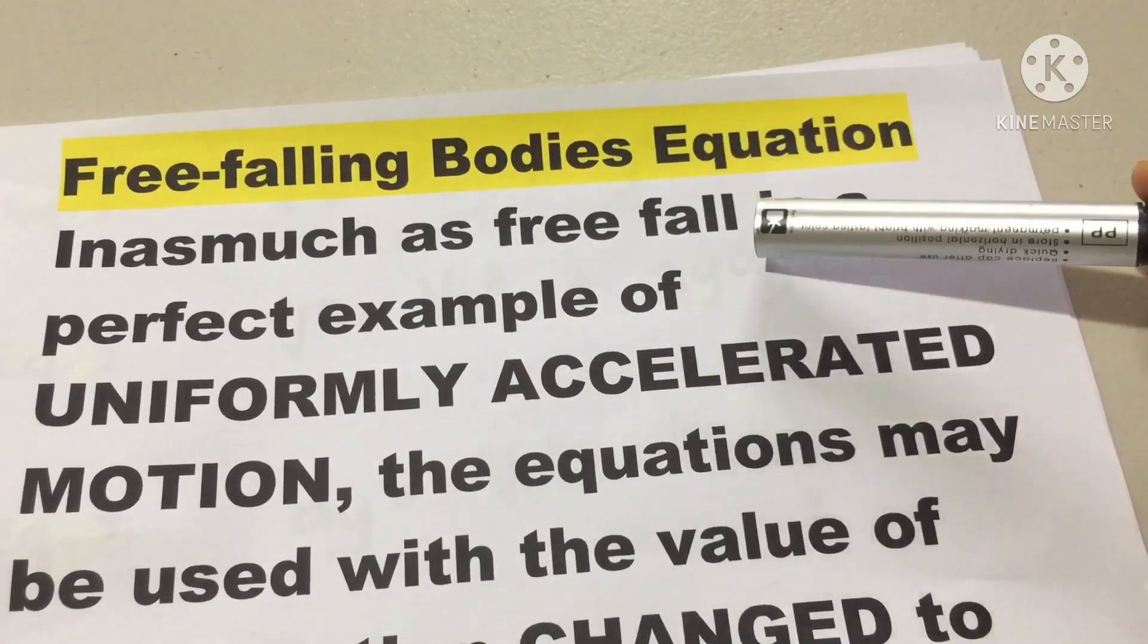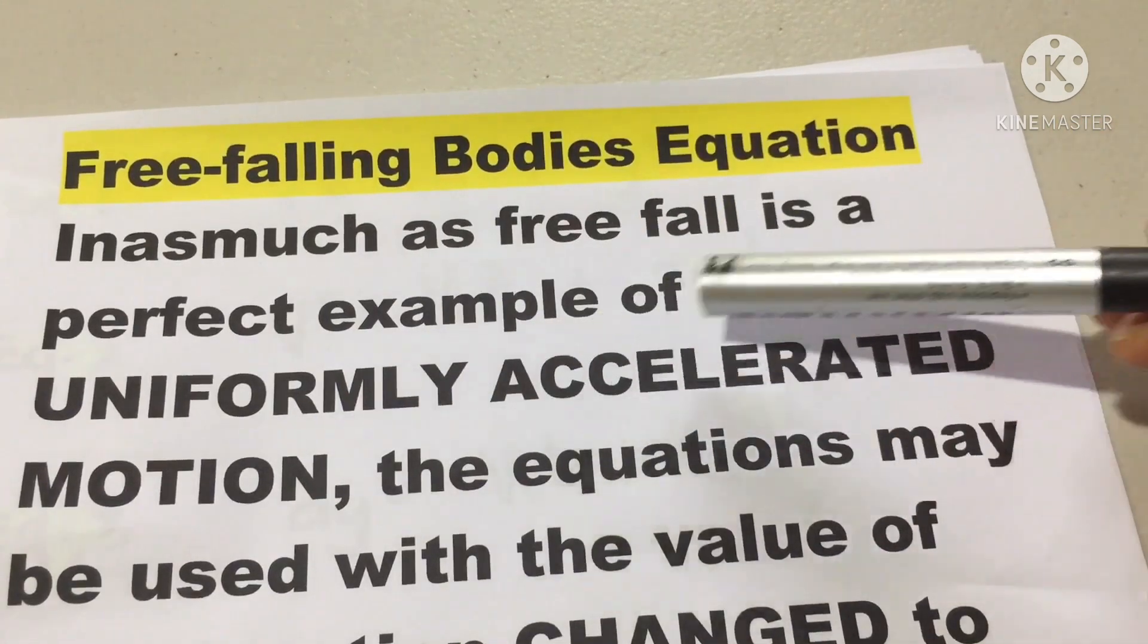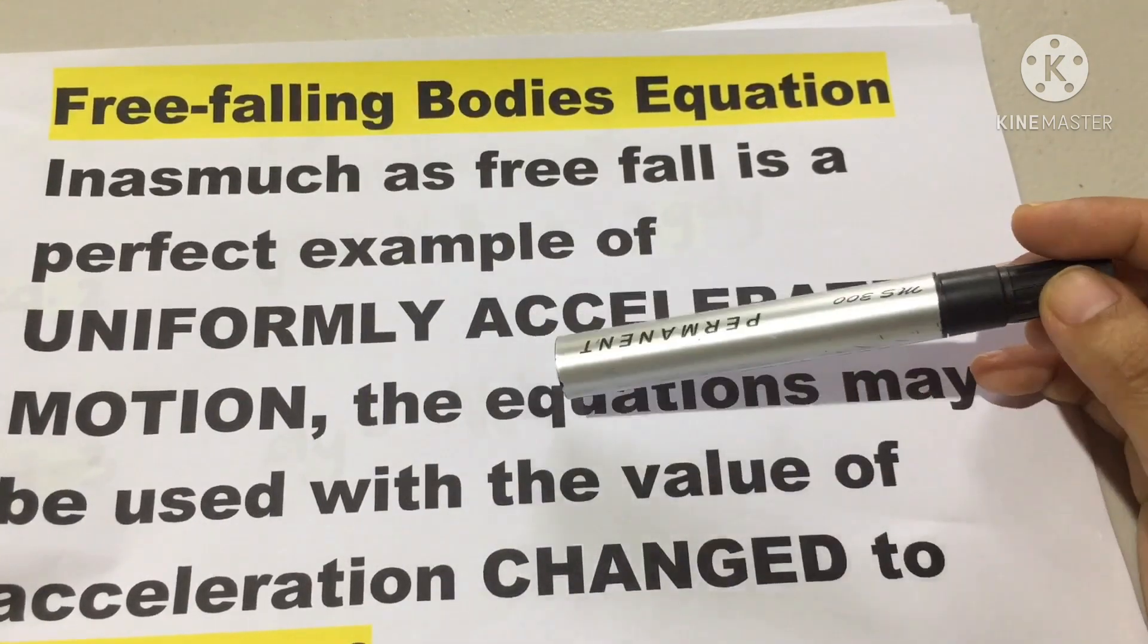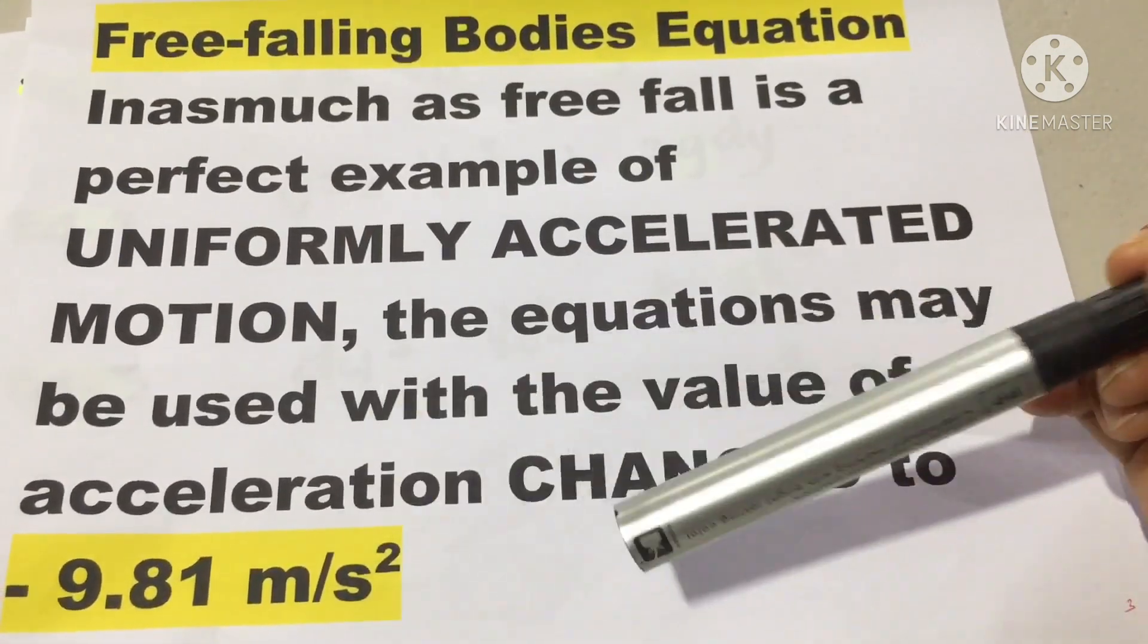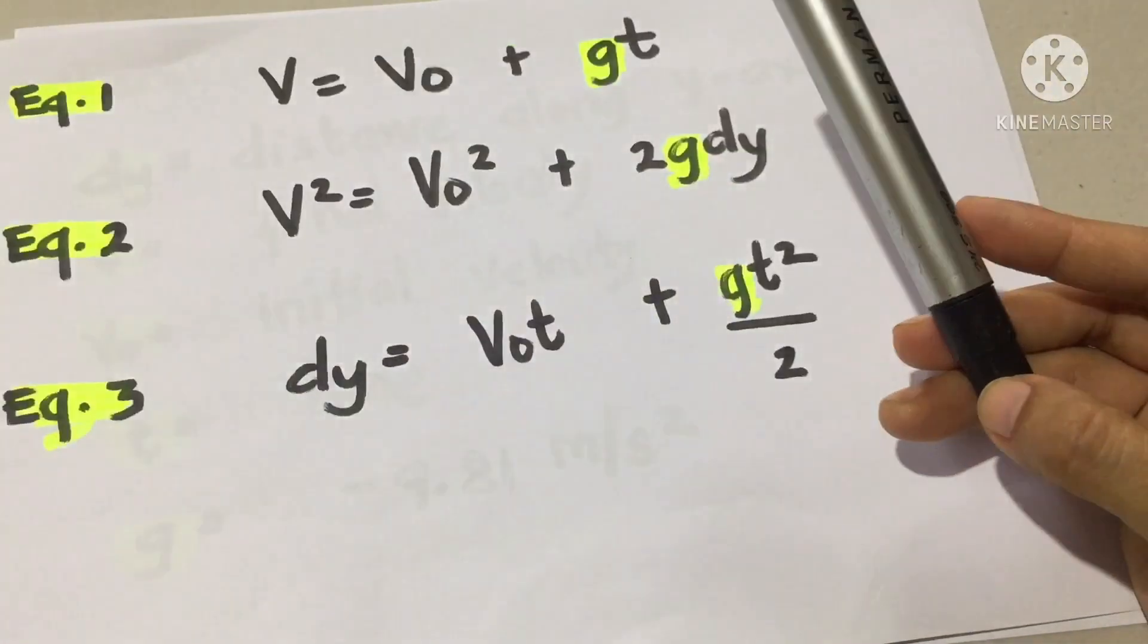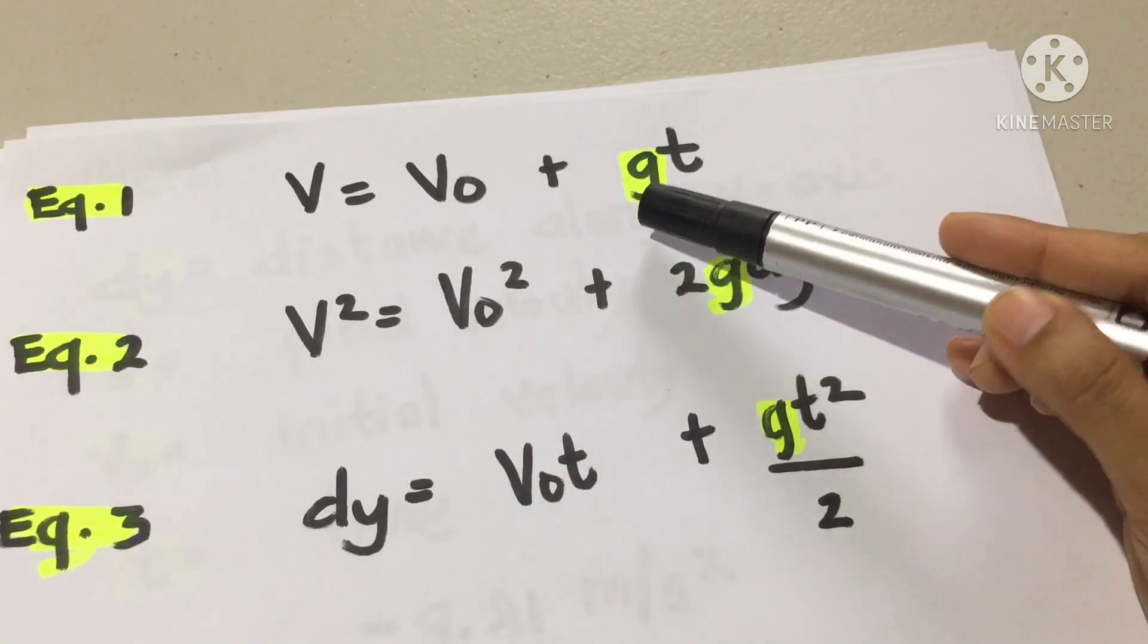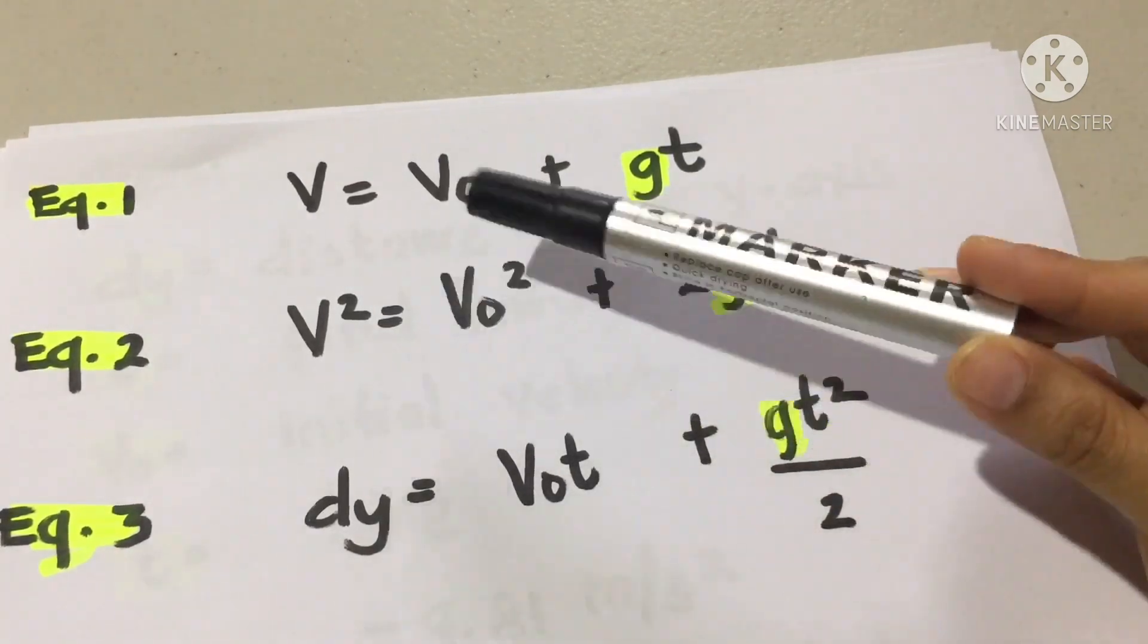Now, let's talk about the free-falling body's equation. Inasmuch as free-fall is a perfect example of uniformly accelerated motion, because in free-fall situation we neglect air resistance. That is why the acceleration is uniform. The equations may be used with the value of acceleration. Our acceleration was changed to negative 9.81 meters per second squared. So what we have here is the kinematic equation, but as you can observe, our acceleration originally was A, but actually, it was changed by gravity.